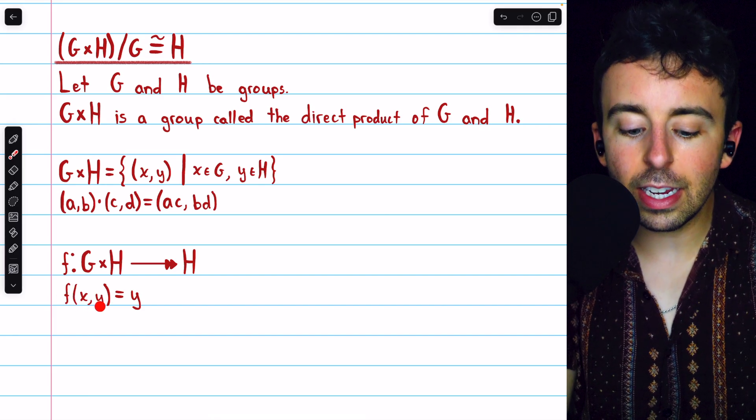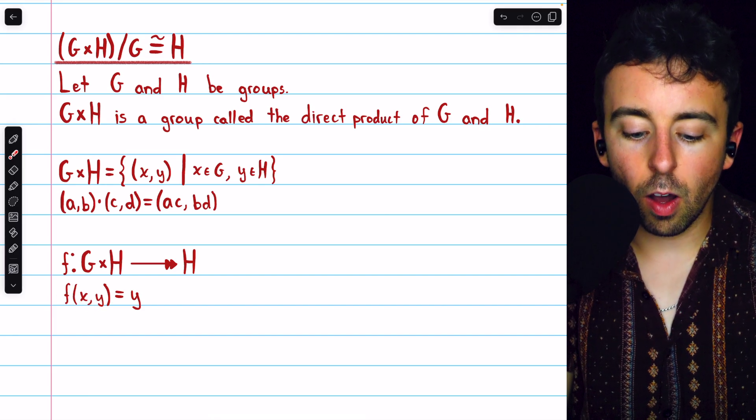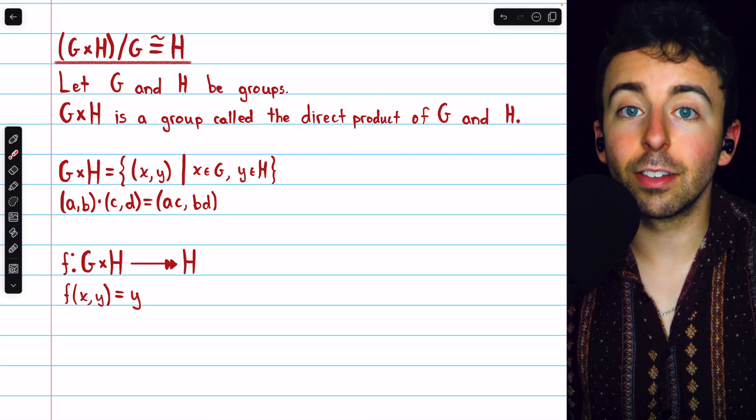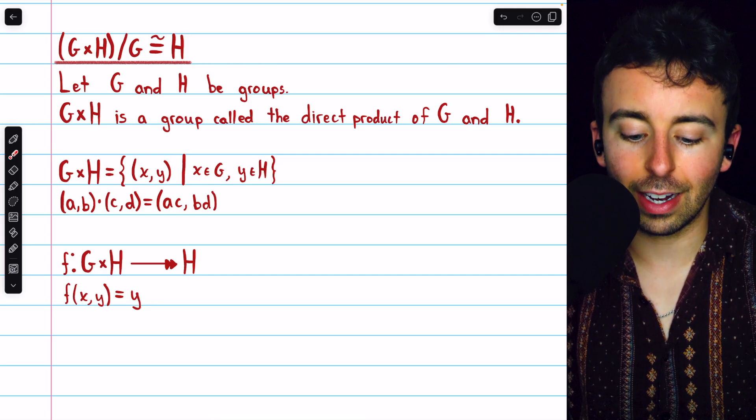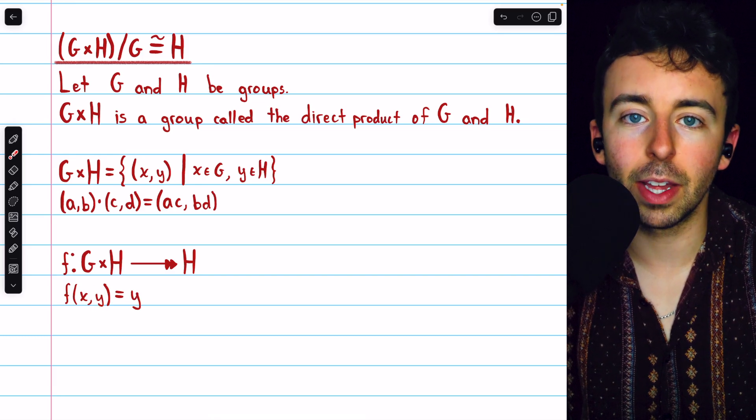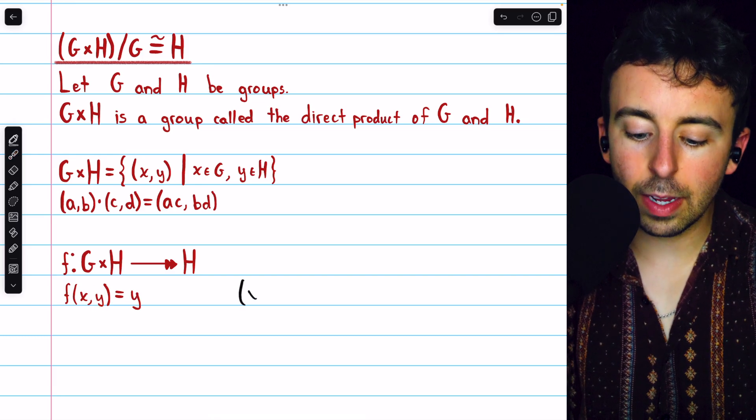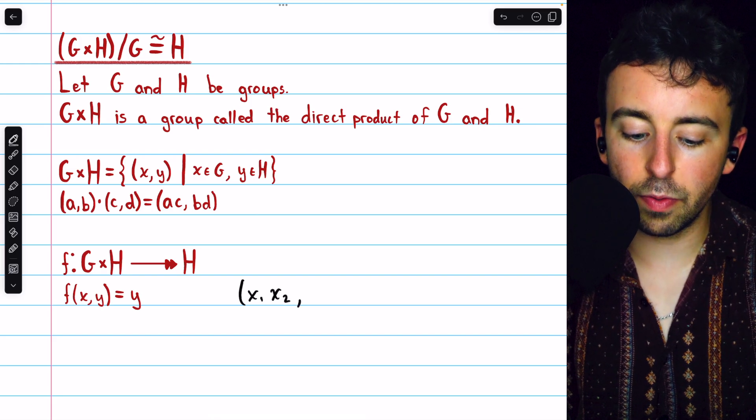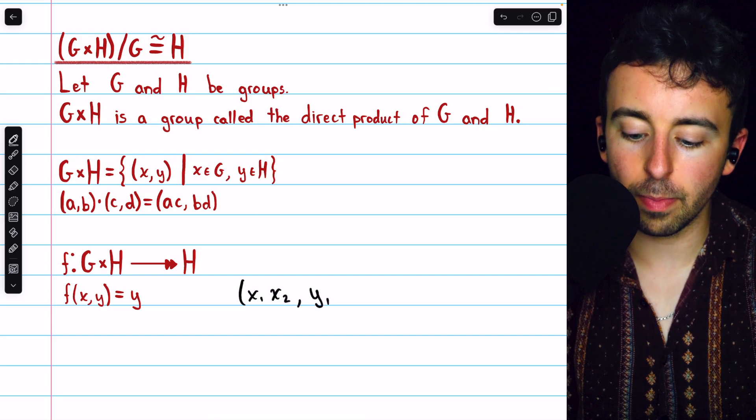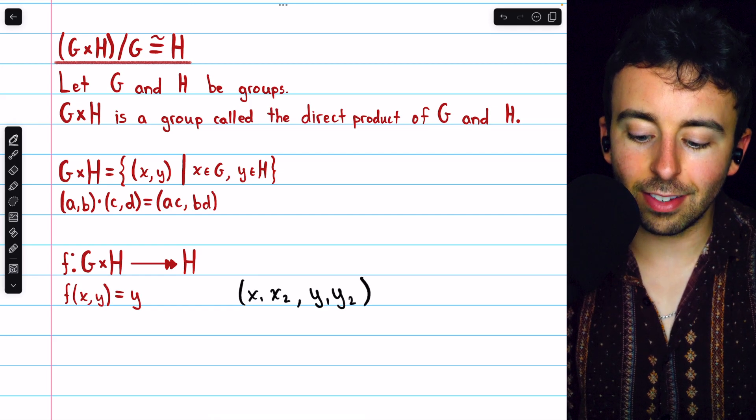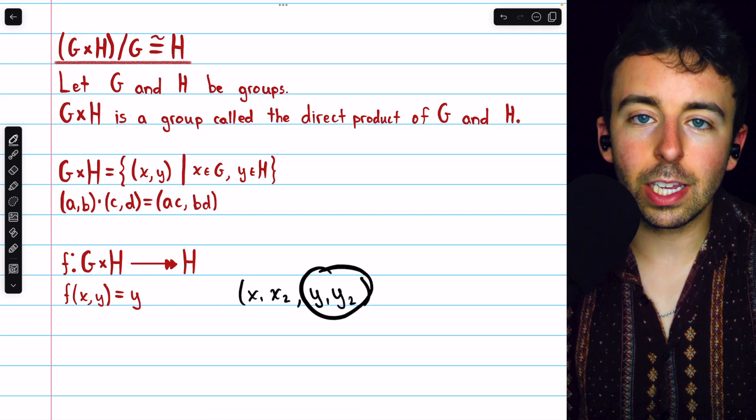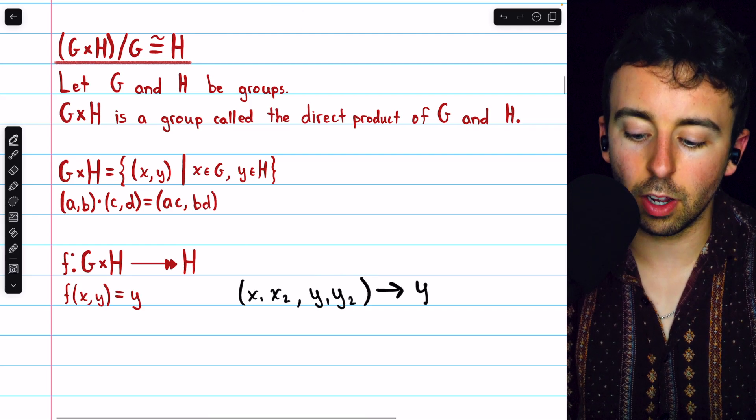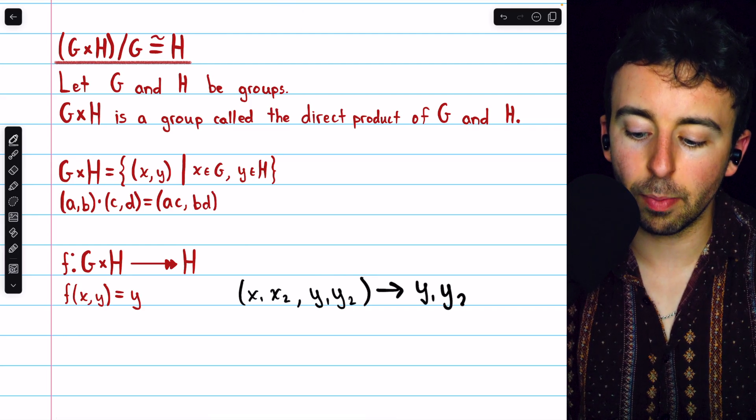The group H is actually a homomorphic image of the direct product of G with H, which this homomorphism F verifies. This homomorphism maps each ordered pair XY onto its second component, which is in the group H. It's trivial to see that this is surjective. Every element of H definitely gets hit by this homomorphism, and it certainly preserves the group operation. If we were to compose two of these ordered pairs from the direct product,